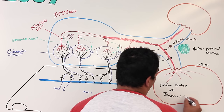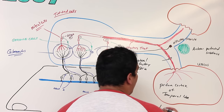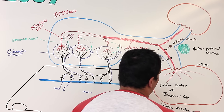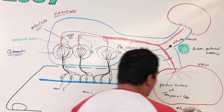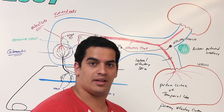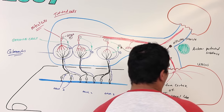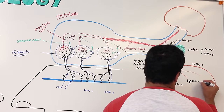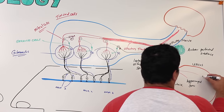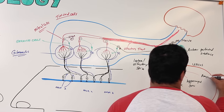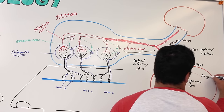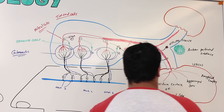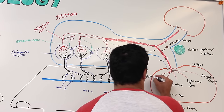The piriform cortex of the temporal lobe is the primary olfactory cortex. There are many different structures located within this vicinity — the lateral olfactory striae also gives off fibers to the hippocampal gyrus, the amygdaloid complex, and the entorhinal complex.